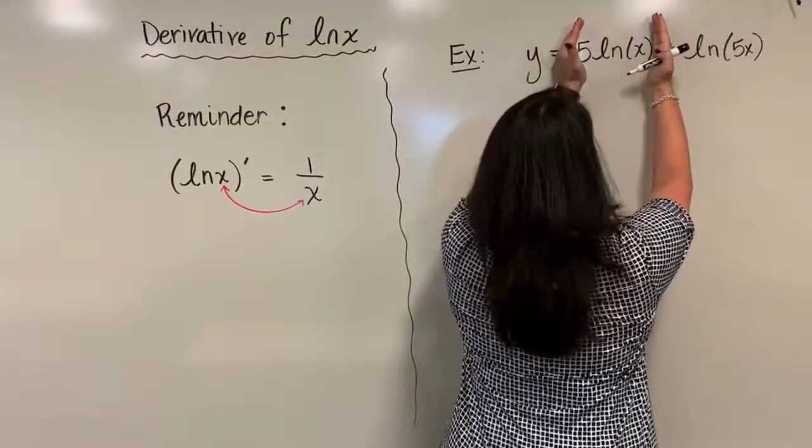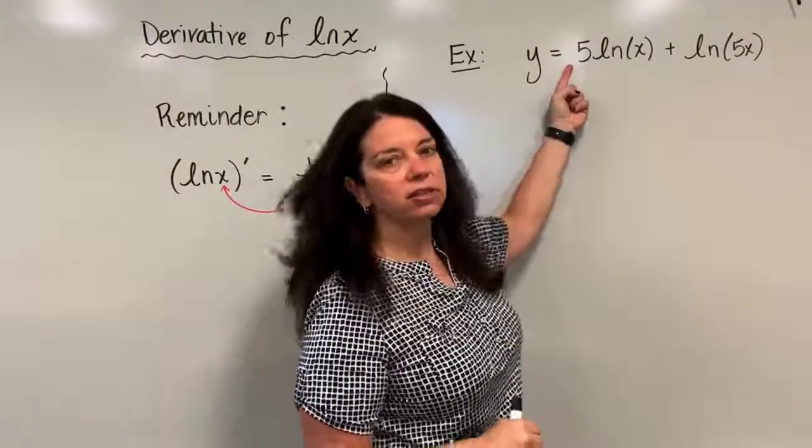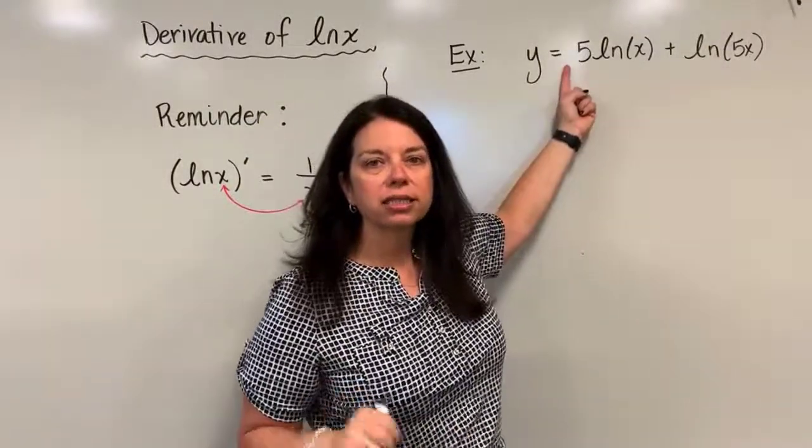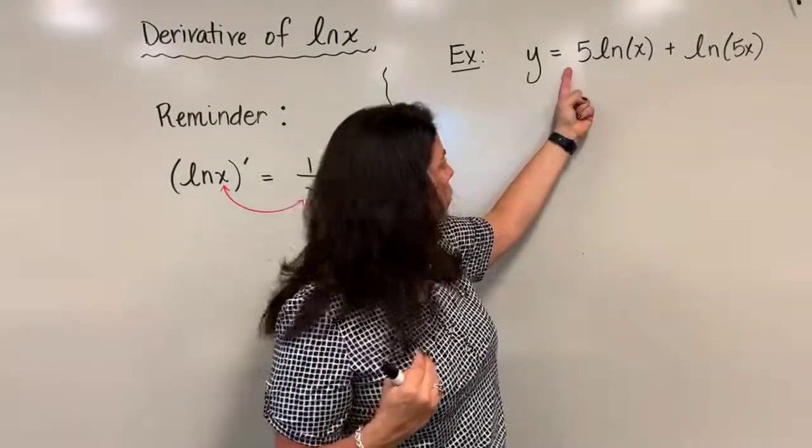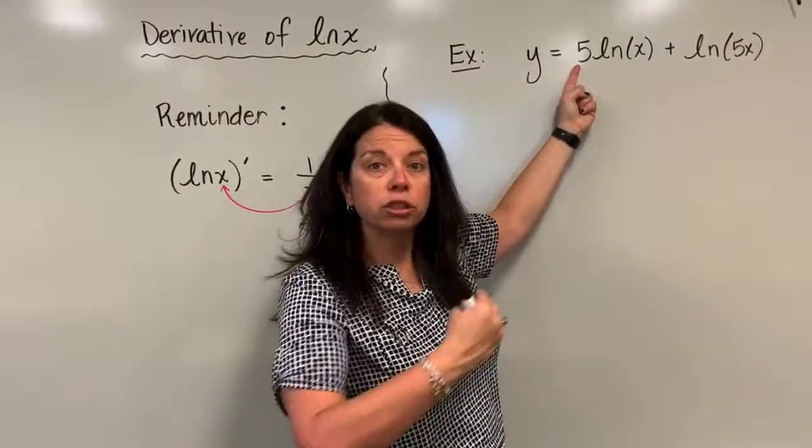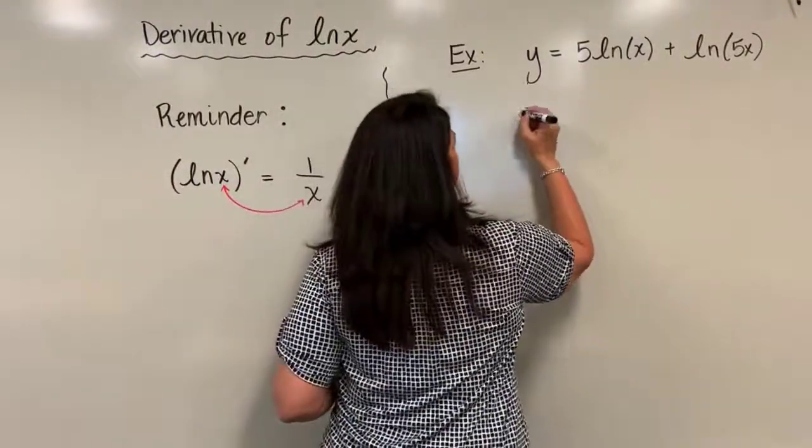Well, it turns out the five that's already in front here is just a constant multiple, so you don't need to find its derivative via the constant multiple rule. We are allowed to just bring that five down and keep it in front of my derivative.